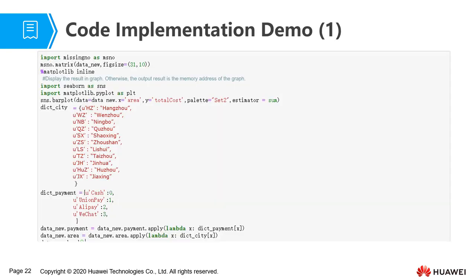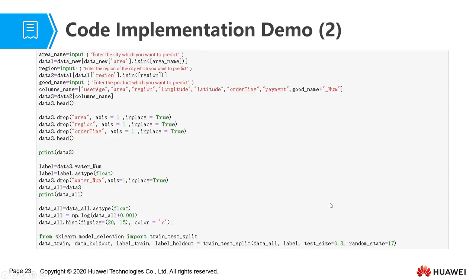Next, let's look at the code. First, import the missingno function to check whether there are missing values. After confirming that there is no missing value, we will use the seaborn package to draw the data to get an intuitive view. Then we can replace the abbreviations of cities — for example, replace 'hz' and 'wz' with 'Hangzhou' and 'Wenzhou' respectively. And replace the payment method with numeric values such as 0, 1, 2, 3. The apply function is used to replace the values. We use the input function to enter the city area and goods to be predicted, then we can view the data after filtering.